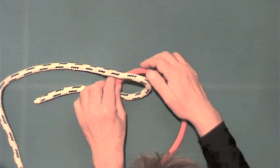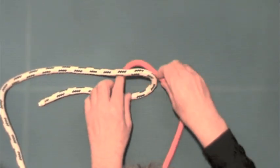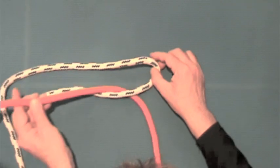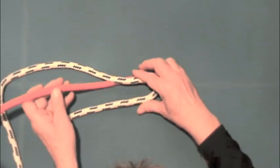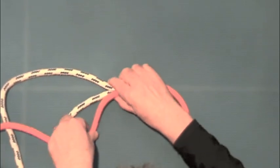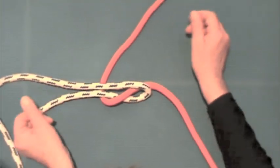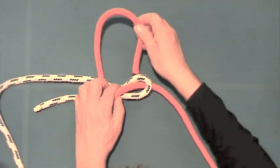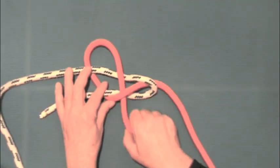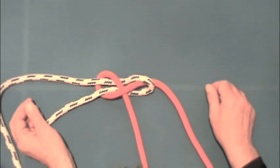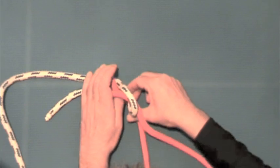Then we take the red line, slide it underneath the bight, and take it down underneath the white and blue line. Then we take it and go across and under the red line. At this point, we have a single sheet bend.